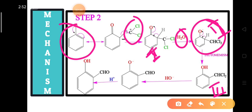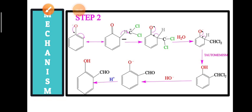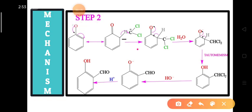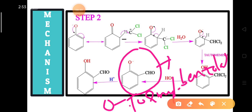The name of intermediate three is ortho-dichloromethyl phenol, since the CHCl2 group called dichloromethyl is present at the ortho position. This ortho-dichloromethyl phenol in the presence of base forms the phenolate ion, which we can call ortho-formyl benzoate or phenolate.